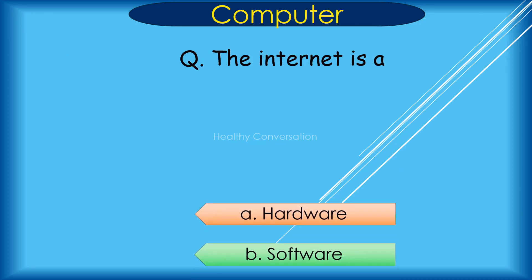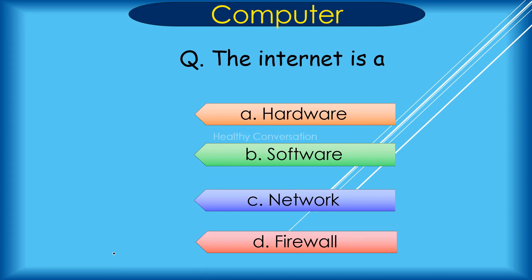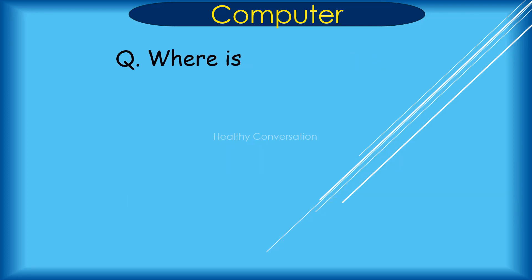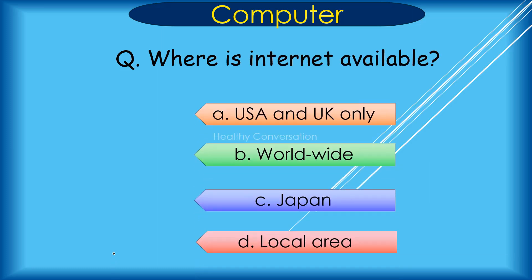Question: The internet is A. Hardware, B. Software, C. Network, D. Firewall. Correct answer: The internet is a network. Question: Where is the internet available? A. USA and UK only, B. Worldwide, C. Japan, D. Local Area. Correct answer is B. Worldwide.